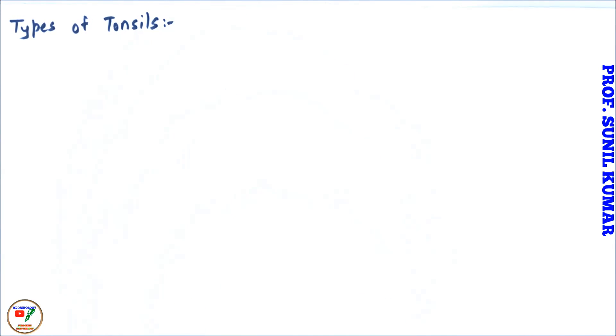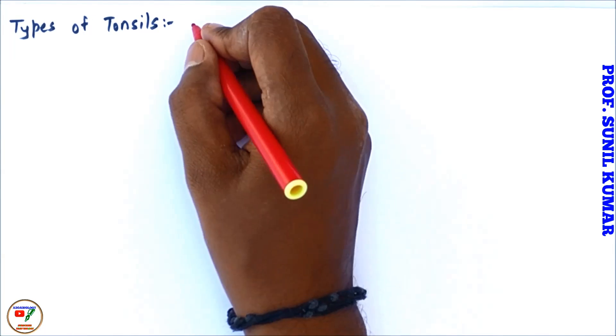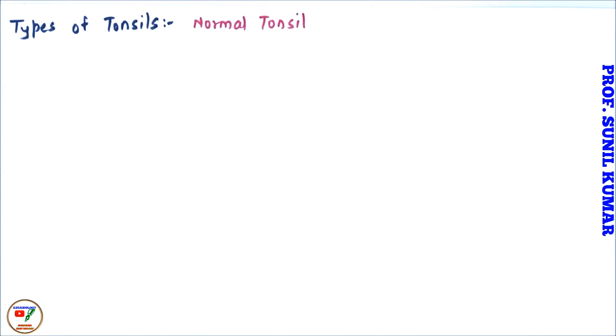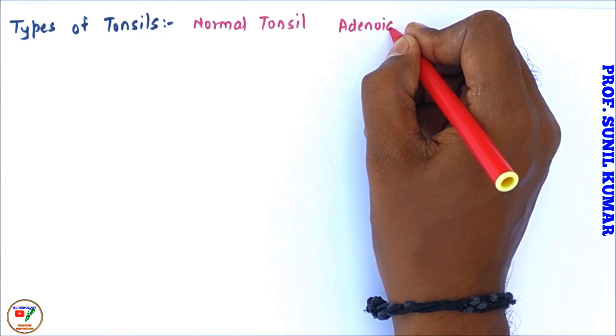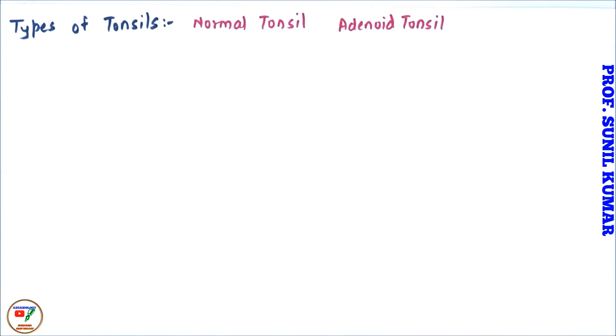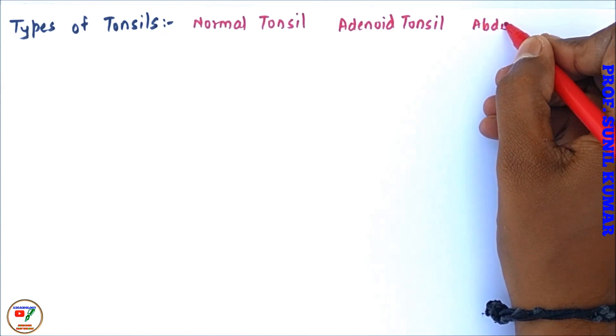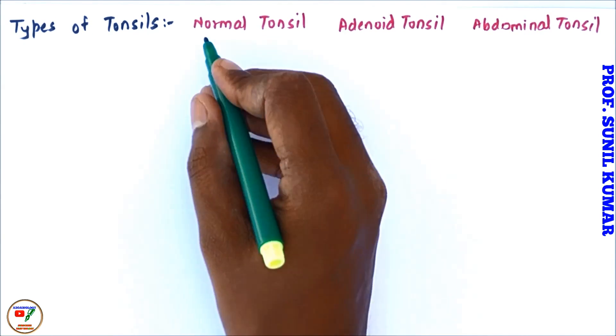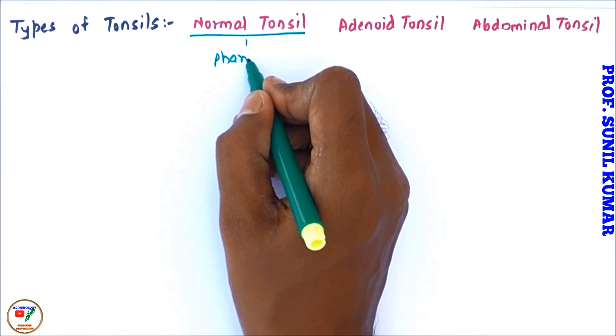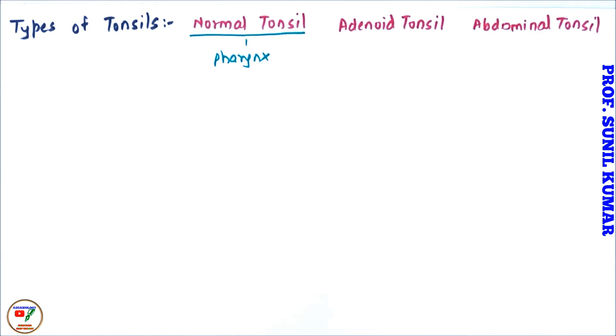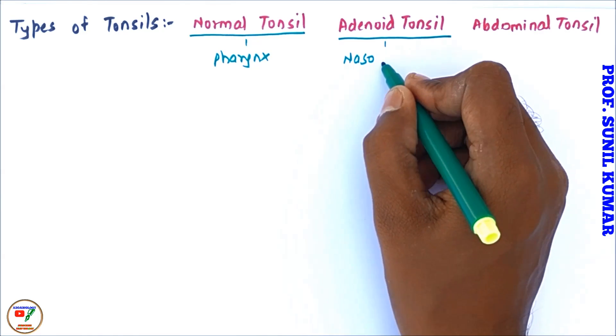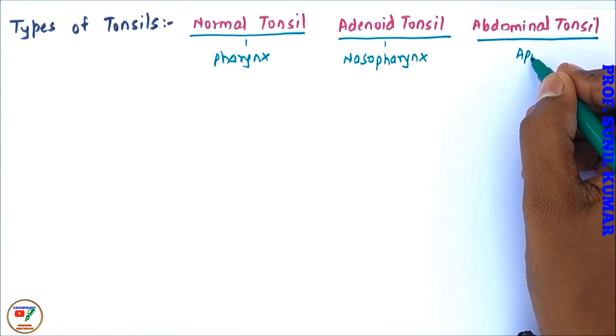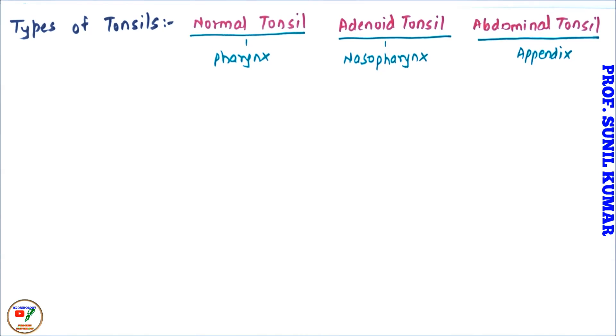Let us try and understand the various types of tonsils that we have in our body. We have the first one as normal tonsil, second one is adenoid tonsil, the third one is abdominal tonsil. Know what exactly and where they are. So normal tonsil is in pharynx, adenoid tonsil is in nasopharynx, abdominal tonsil they are in appendix.